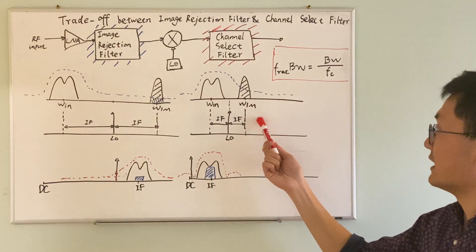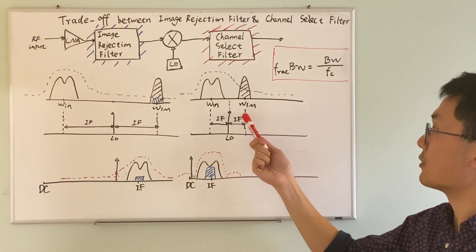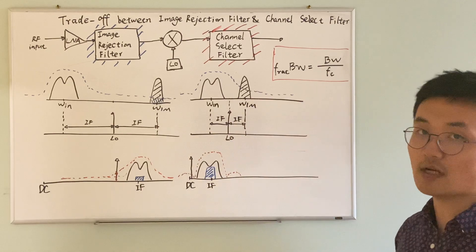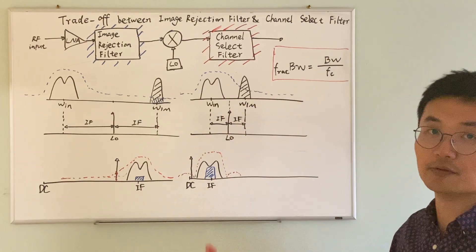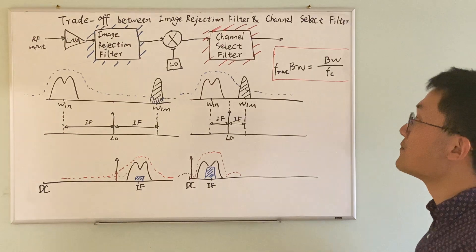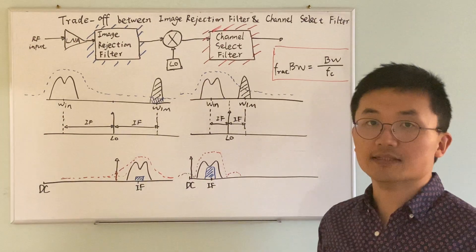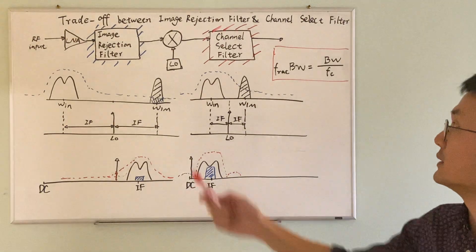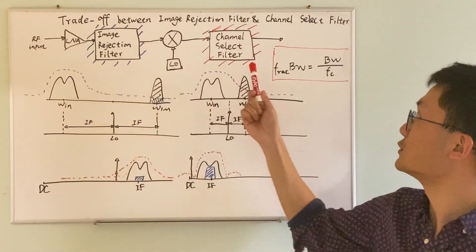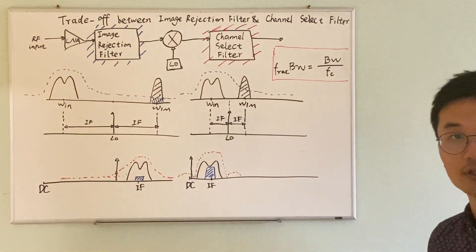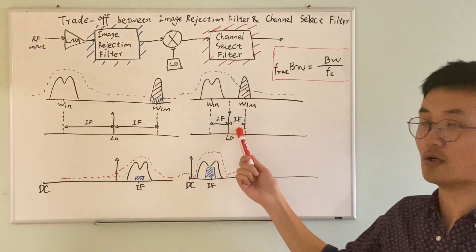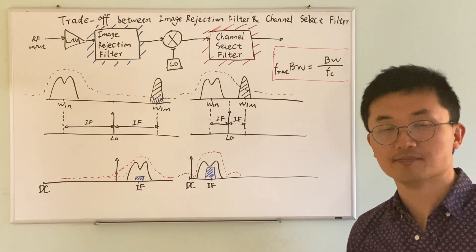Conversely, if your IF is very small, your image rejection is not that great. However, you get very good channel selection. So the balance of the trade-off between the image rejection filter and the channel select filter lies in the choice of the IF frequency.